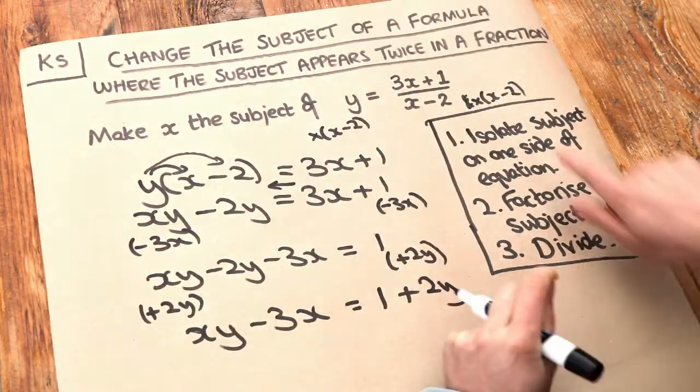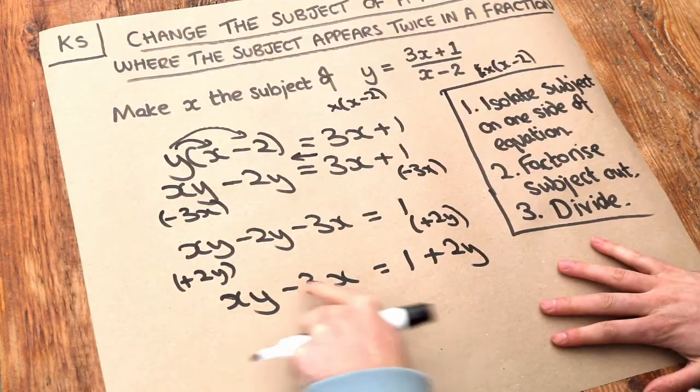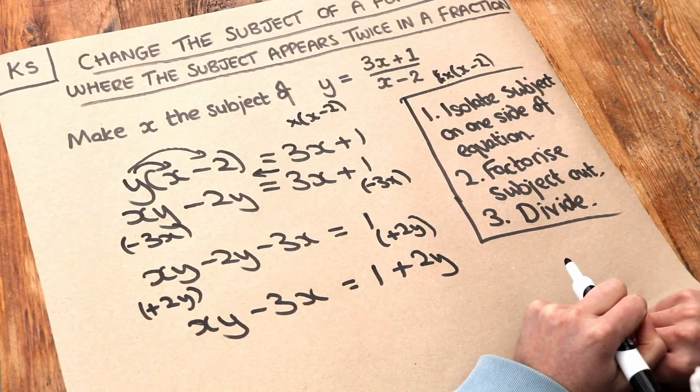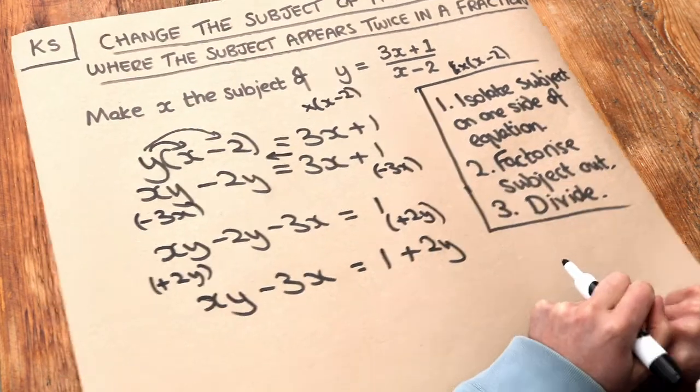And that's great. We have isolated the subject on one side of the equation because all these terms are x terms only. And all the non-x terms are on the other side of the equation. So now we can do step 2, factorize the subject out.